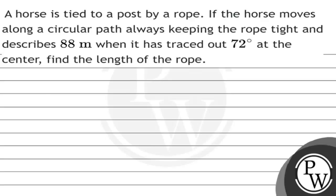Hello Watcho, let's see the question. A horse is tied to a post by a rope. If the horse moves along a circular path, always keeping the rope tight, and describes 88 meters when it has traced out 72 degrees at the center, find the length of the rope. So here we have to find the length of the rope.